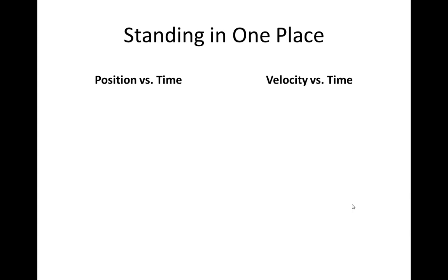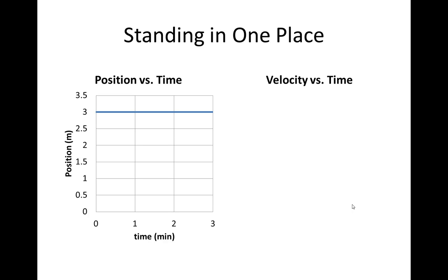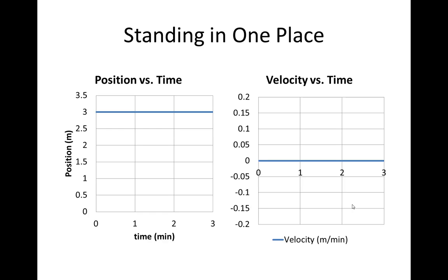Let's look at position time graphs versus velocity time graphs for various conditions. If you're standing in one place, on a position time graph it's a horizontal line at that position — in this case, 3 meters. Because he's standing in one position, there is no velocity, so it's going to be a horizontal line for the same time interval at zero.